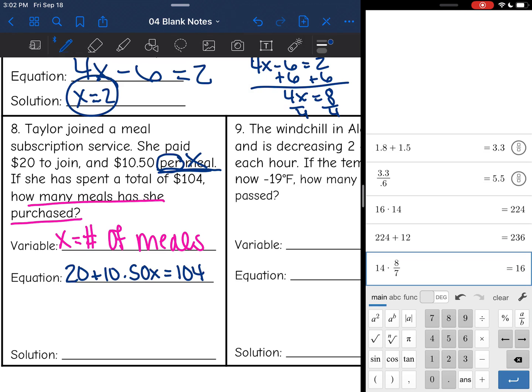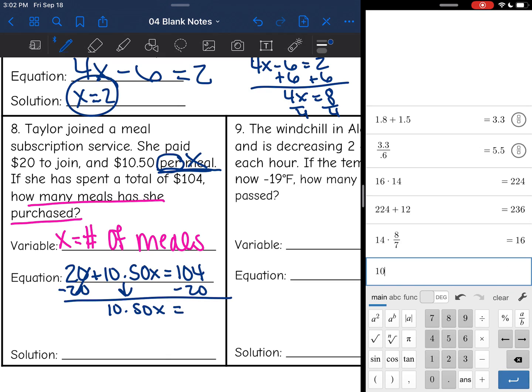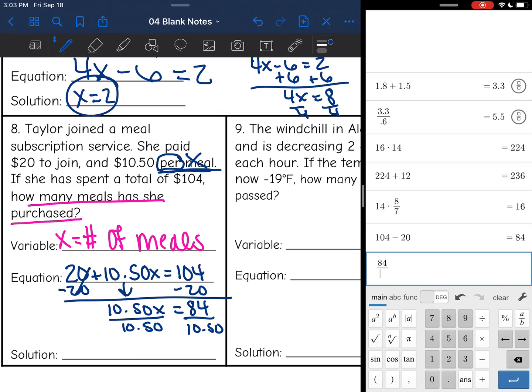Okay, now I'm going to solve this equation for x, so I can figure out how many meals she purchased. So I'm going to subtract 20 from both sides, bring down this $10.50x, and I'll get whatever 104 minus 20 is, which is 84, and then we're going to divide by $10.50, and 84 divided by 10.50 is 8. So that means she purchased 8 meals for that $104.